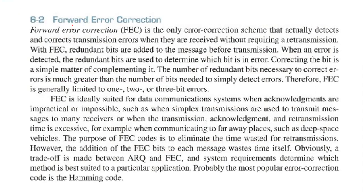Forward error correction is the only error correction scheme that actually detects and corrects transmission errors when they are received, without requiring retransmission. With FEC, redundant bits are added to the message before transmission. When an error is detected, the redundant bits are used to determine which bit is in error. Correcting the bit is a simple matter of complementing it.